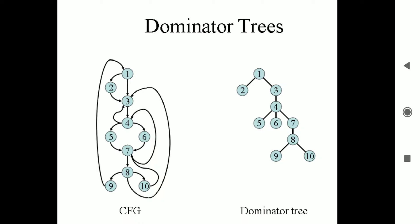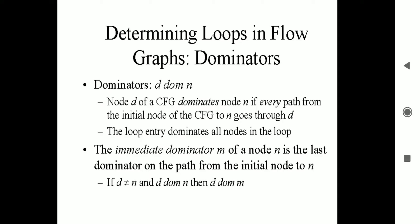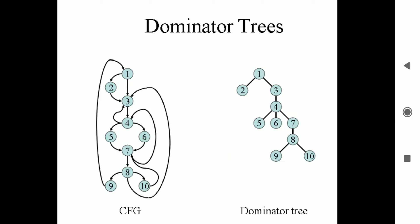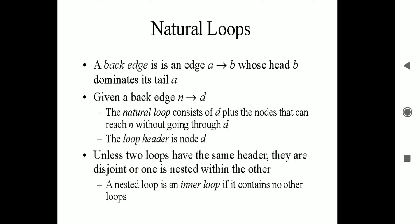We draw a dominator tree. From this we get to know the loops. A back edge is an edge A to B whose head B dominates its tail A. For example, if we consider 3 to 4 as a forward edge, then 4 to 3 is the back edge, because 3 dominates 4. Given a back edge N to D, the natural loop consists of D plus the nodes that can reach N without going through D. The loop header is node D. Unless two loops have the same header, they are disjoint or one is nested within the other. A nested loop is called an inner loop.